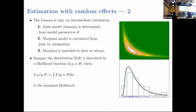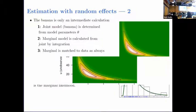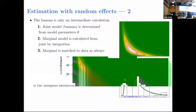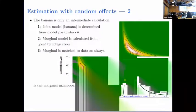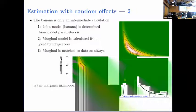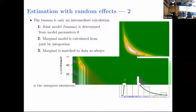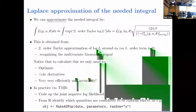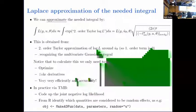When we vary our model parameters, we change the shape of that banana, but we don't observe the random effects part. So we integrate out all the random effects, obtaining the marginal likelihood of our observations given our model parameters. This integral can be thousands of dimensions in our situation, so we need to approximate it efficiently.